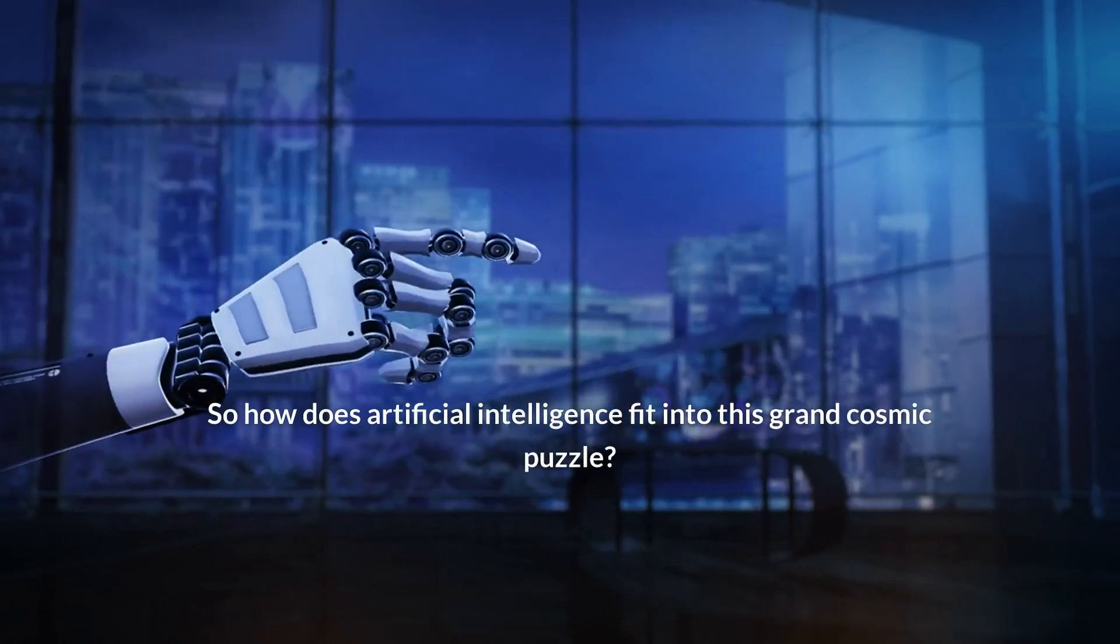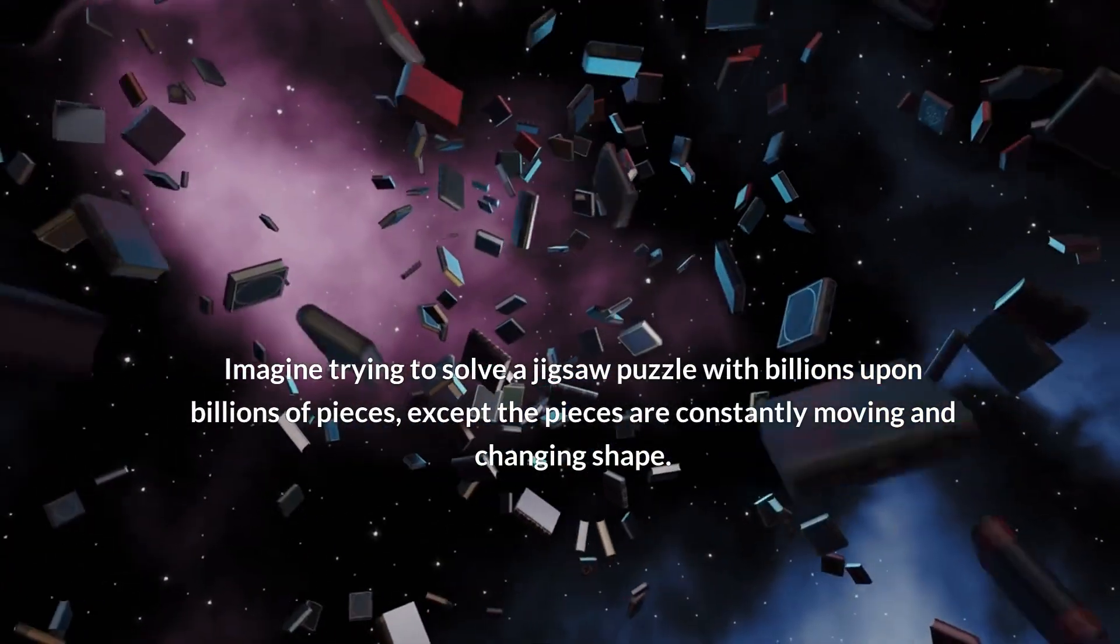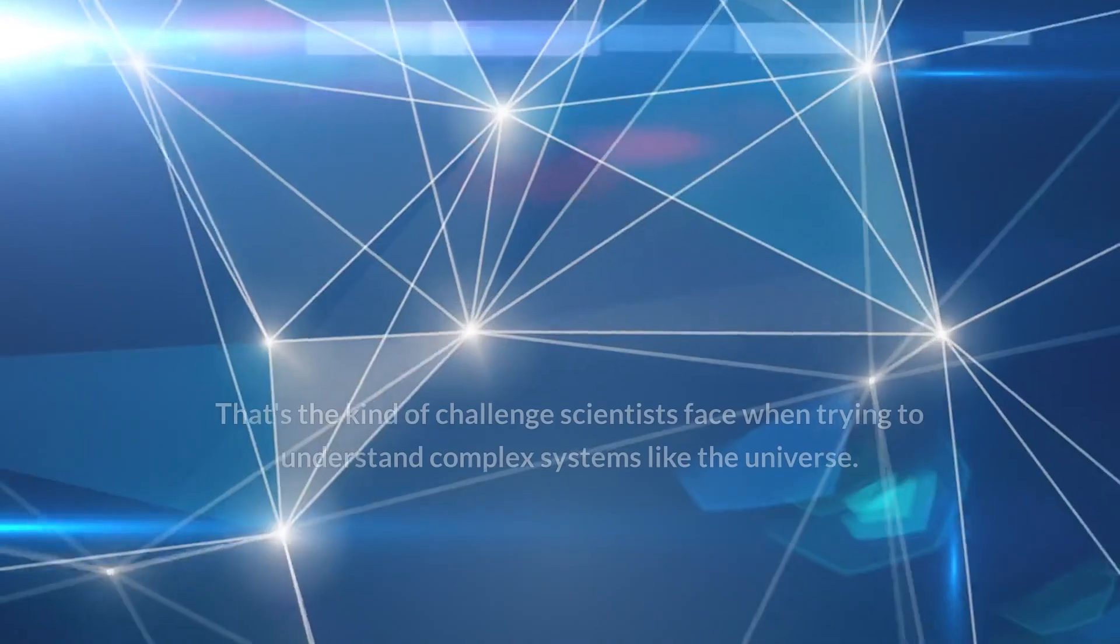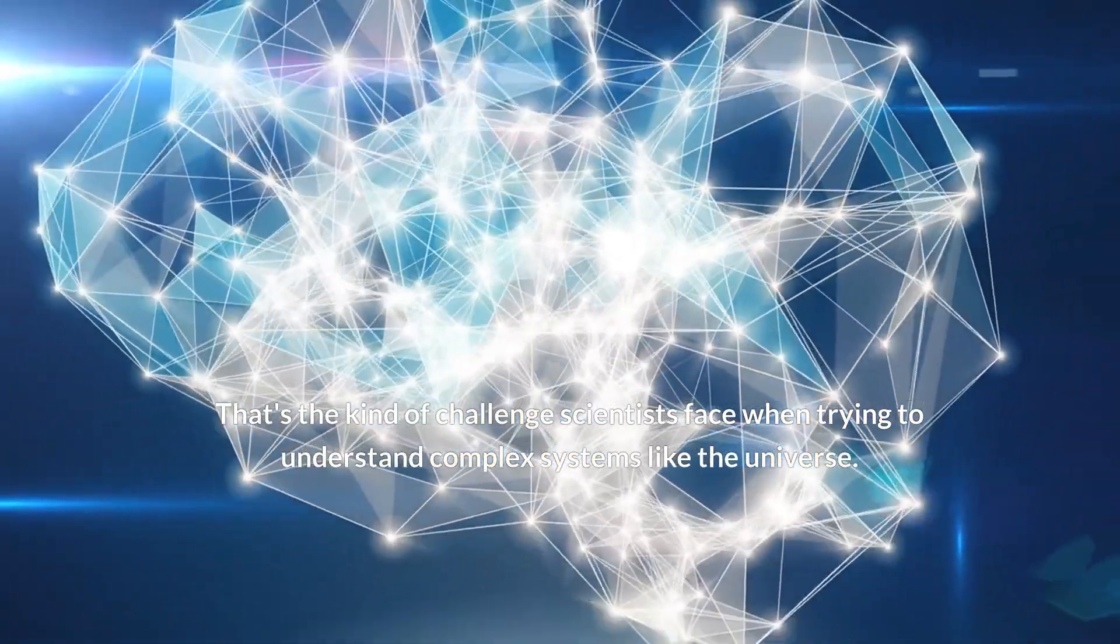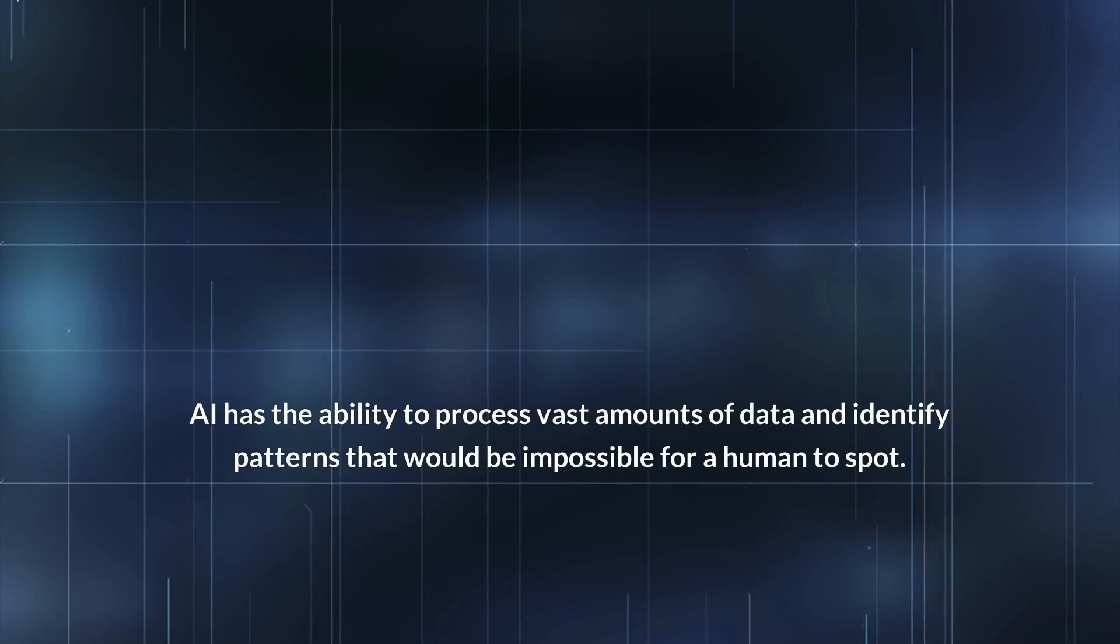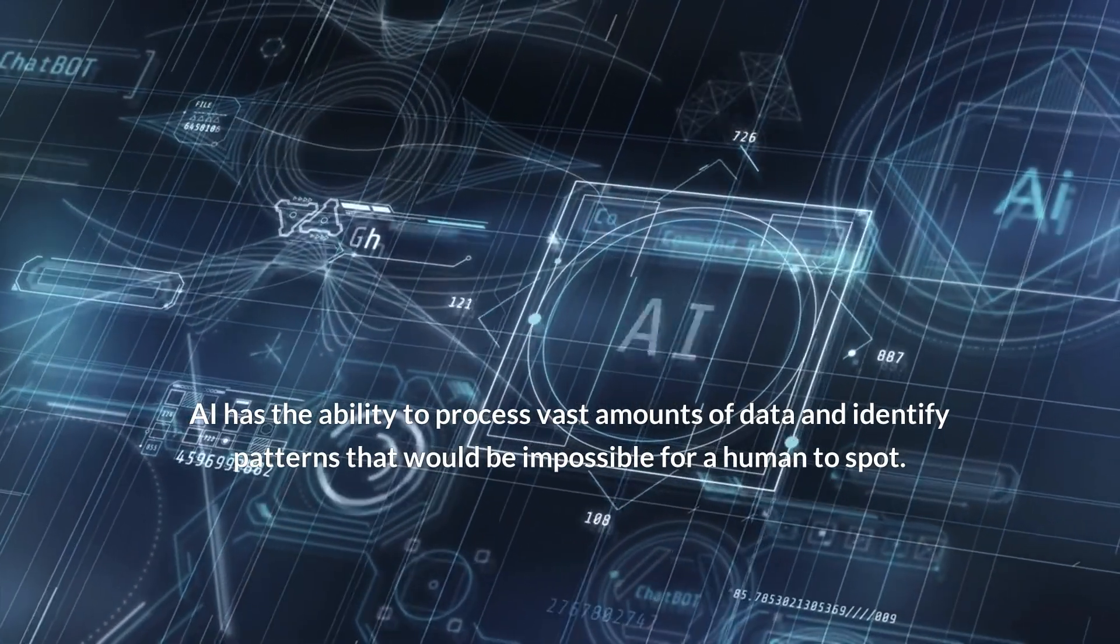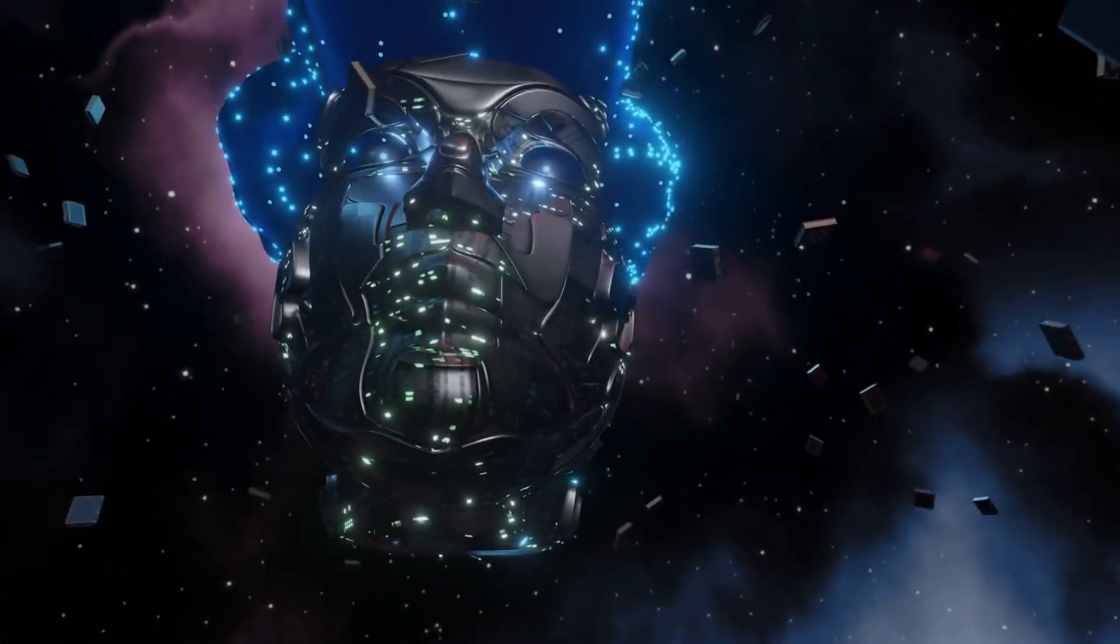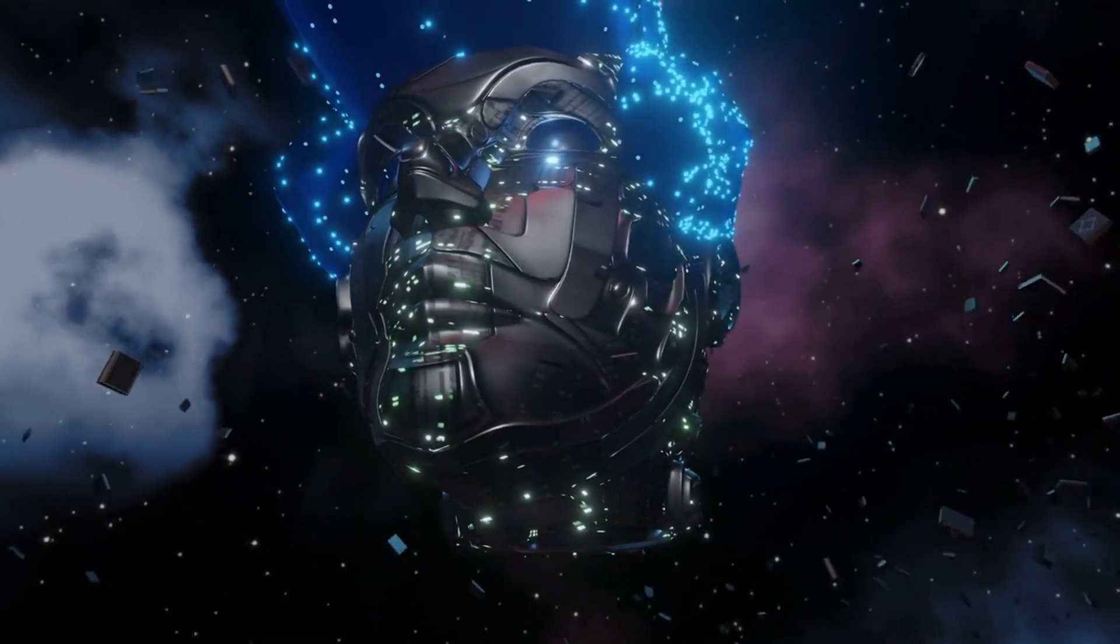So how does artificial intelligence fit into this grand cosmic puzzle? Imagine trying to solve a jigsaw puzzle with billions upon billions of pieces, except the pieces are constantly moving and changing shape. That's the kind of challenge scientists face when trying to understand complex systems like the universe. This is where AI comes in. AI has the ability to process vast amounts of data and identify patterns that would be impossible for a human to spot. It's like having a superhuman assistant that never gets tired, never gets bored, and can work at speeds that would make even the fastest human mind seem sluggish.